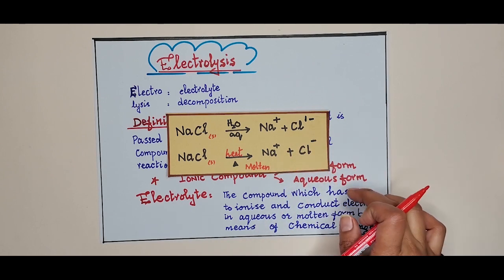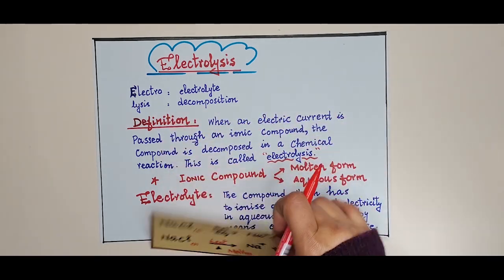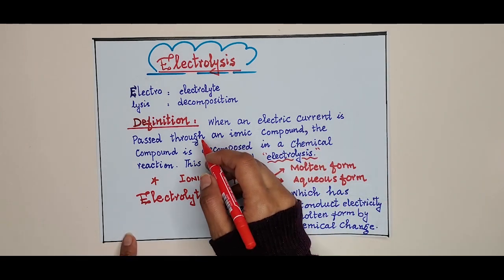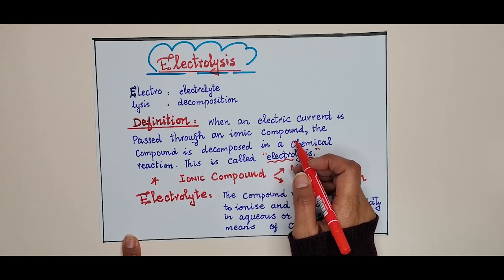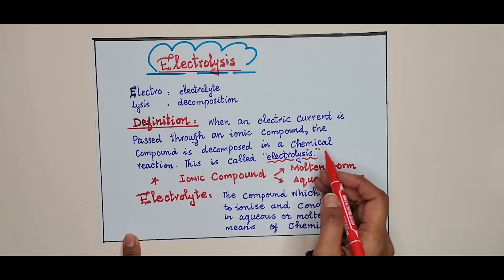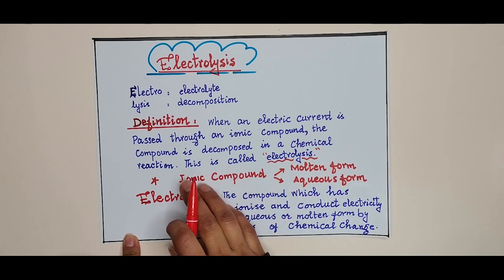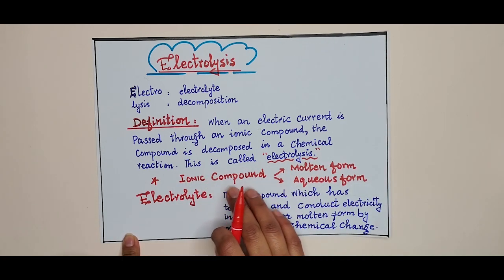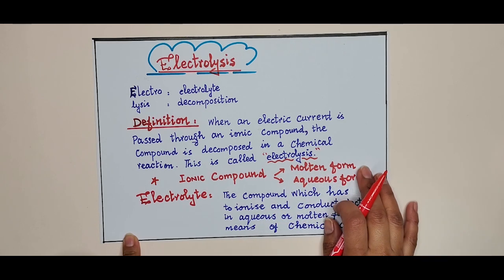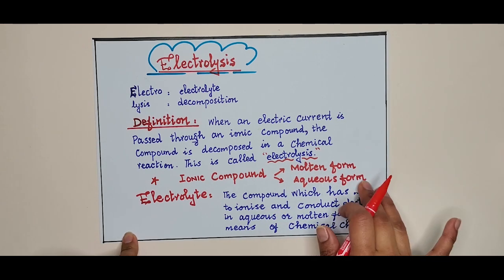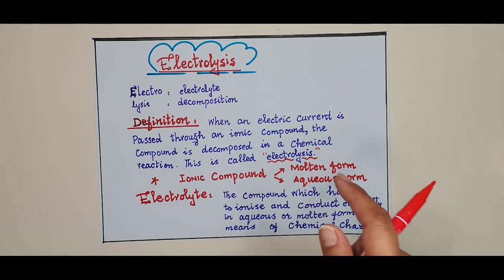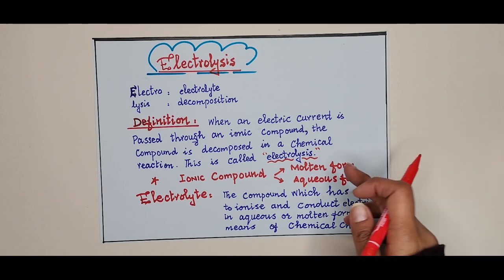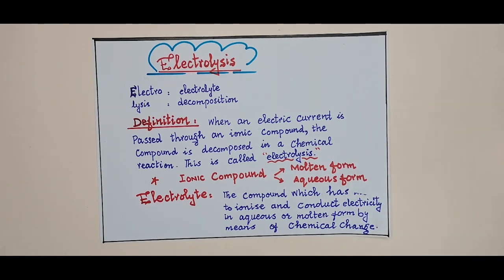Now the definition: when an electric current is passed through an ionic compound, the compound is decomposed in a chemical reaction — this is called electrolysis. An ionic compound will conduct electricity in molten form or in aqueous form. So whenever we discuss an ionic compound in electrolysis, it will conduct electricity in one of these two states.